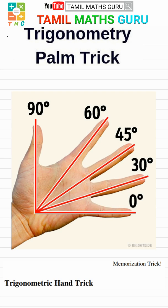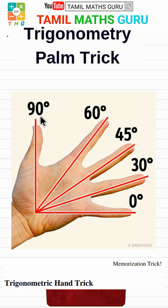We will use the hand trick and palm trick to find out the values. The little finger represents 0 degrees, the ring finger represents 30 degrees, the middle finger is 45 degrees, the index finger is 60 degrees, and the thumb represents 90 degrees.